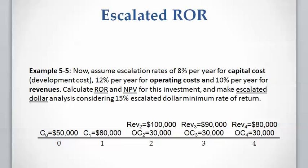Now let's work on a more comprehensive example using an Excel spreadsheet. This is the data for an investment: capital costs of $50,000 and $80,000 at present time and year one. Revenues of $100,000, $90,000, and $80,000 at years two, three, and four. Operating cost is constant at $30,000 from year two to year four. We consider escalation rates of 8% for capital cost, 12% for operating cost, and 10% for revenues. Let's calculate the rate of return, NPV, and escalated dollar cash flow.